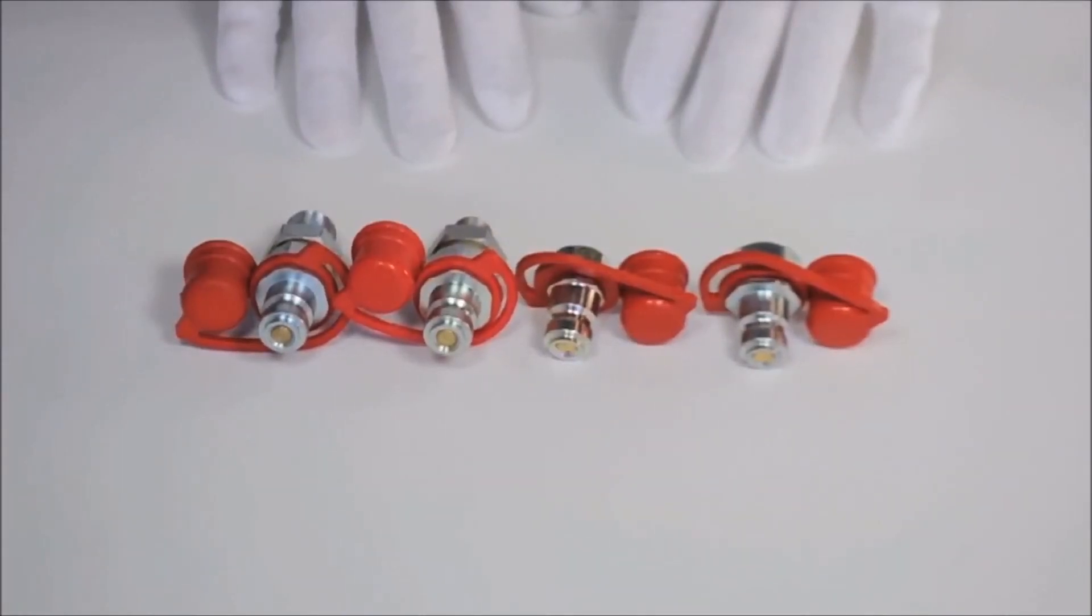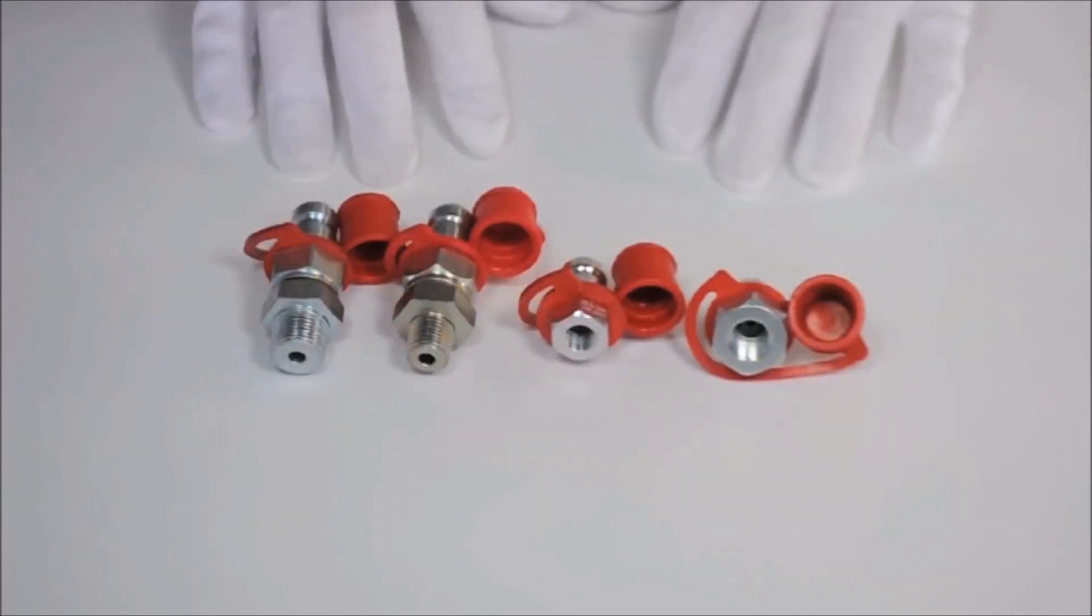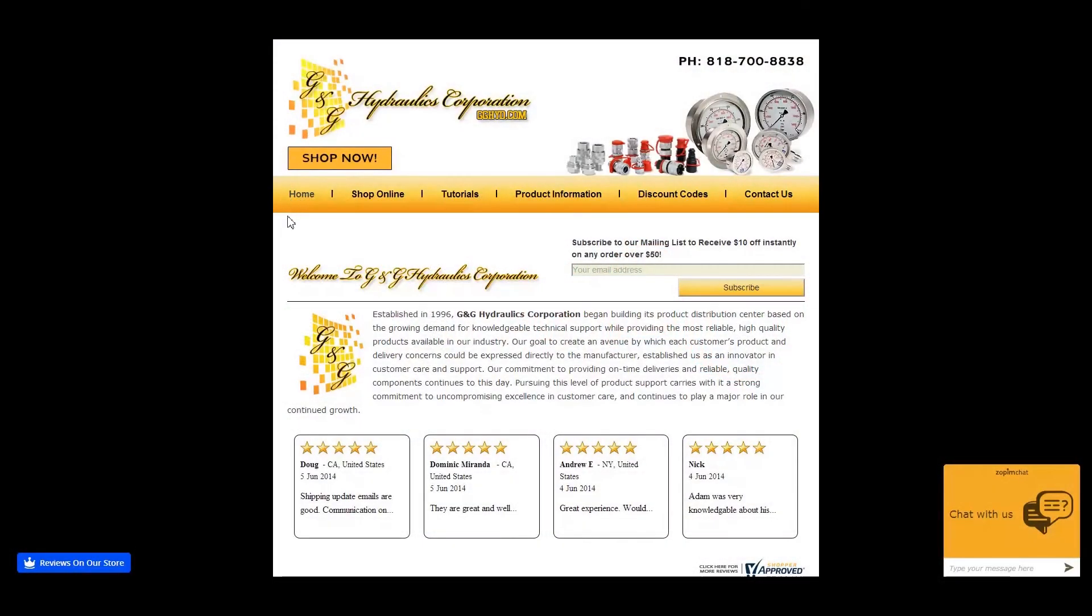As seen here, we have four identical nipples that are all the same on one side, but have different threads on the other side in both female and male that are of different sizes.